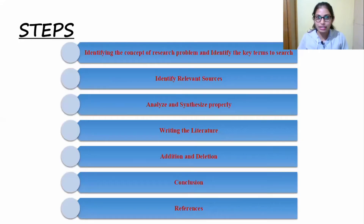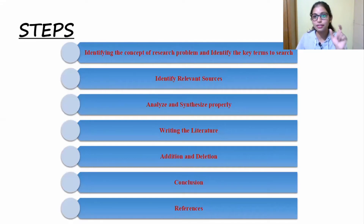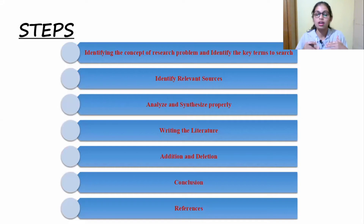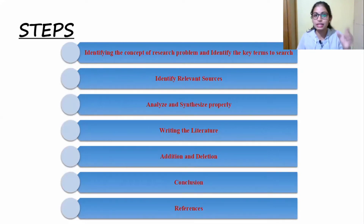The first detailed step is identifying the research problem and identifying key terms to search. For example, my dissertation topic was on papaya leaf extract to treat dengue fever — the effect of papaya leaf during dengue fever. The key terms from this topic are 'papaya leaf' and 'dengue fever.' Key terms depend on your topic, and those are the specific terms you need to search.